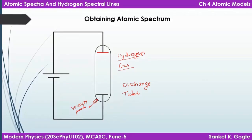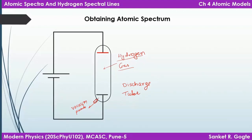The hydrogen gas filled in the discharge tube is rarefied — at very low pressure — so a very small number of atoms are present inside that tube. The discharge tube is then connected to a high voltage DC power supply, and very high voltage is applied across two electrodes. This electrode colored red is the anode, at higher positive potential, and the other is the cathode at negative potential.